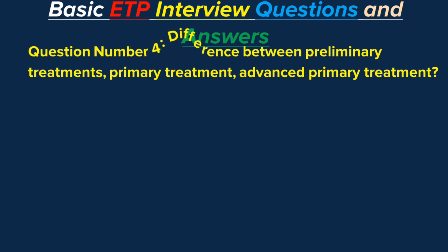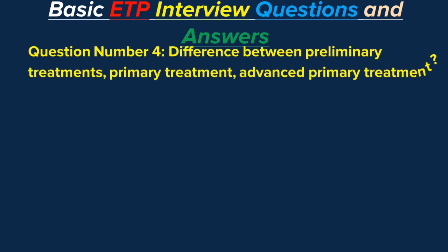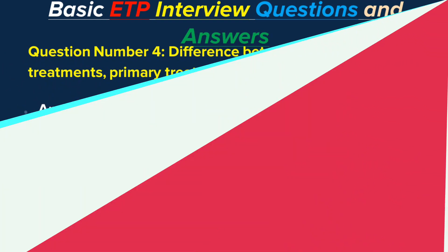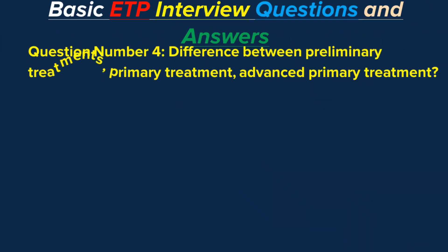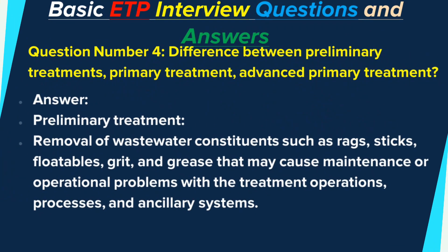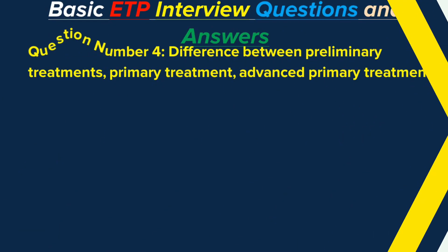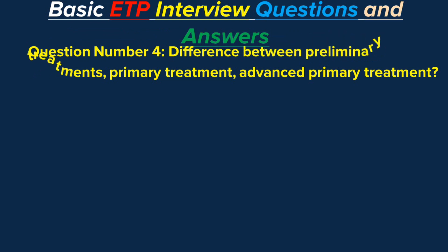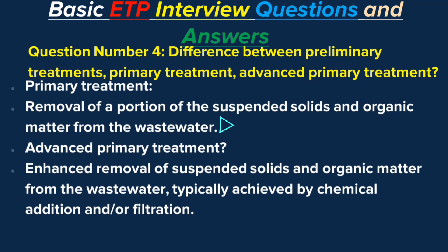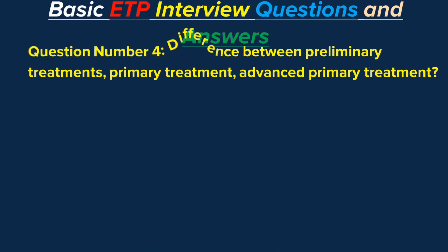Question number 4: Difference between Preliminary Treatment, Primary Treatment, and Advanced Primary Treatment? Answer. Preliminary Treatment involves removal of a portion of the suspended solids and organic matter from the wastewater. Advanced Primary Treatment refers to enhanced removal beyond standard preliminary processing.